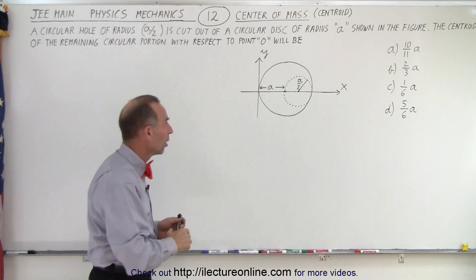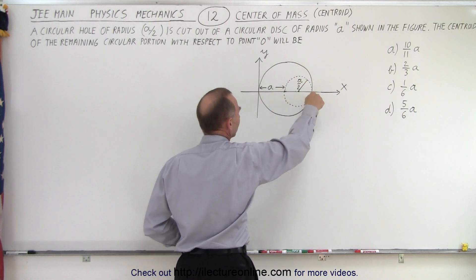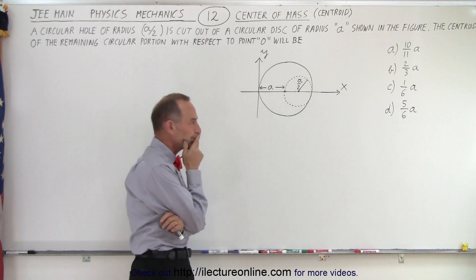So they're looking for the centroid of this portion that's remaining after this is cut off. How do we do that?